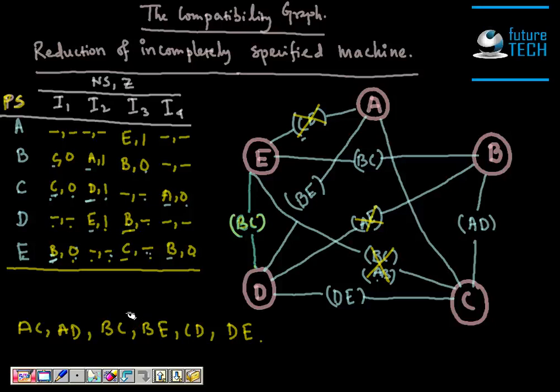In the last tutorial we learned how to develop a merger graph given an incompletely specified machine, and we also learned how to find the compatible pairs. Now we will be developing a compatibility graph using the merger graph in order to reduce the incompletely specified machine.